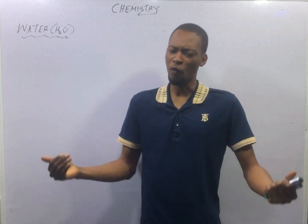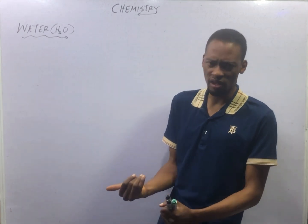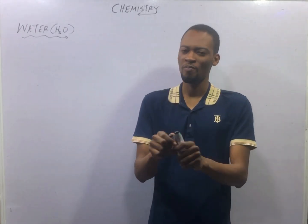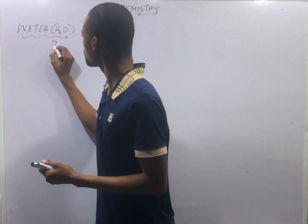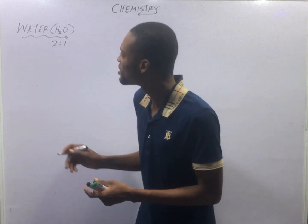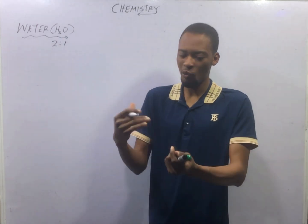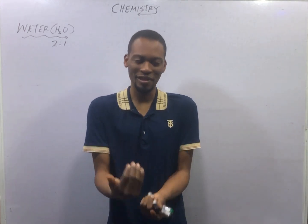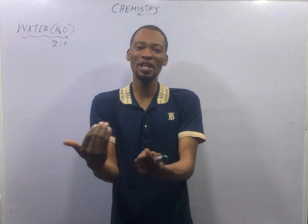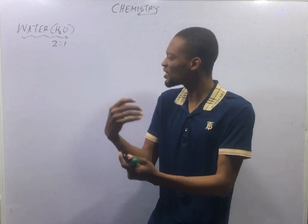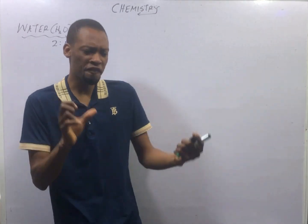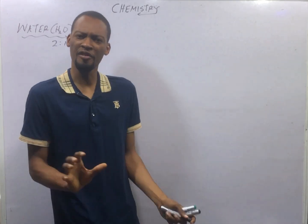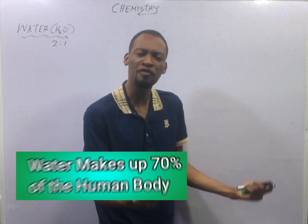Water is a compound made up of hydrogen and oxygen in the ratio 2:1, which means 2 hydrogen and 1 oxygen. Water is extremely important. In fact, Thales of Miletus, a philosopher, argued that the world came from water.